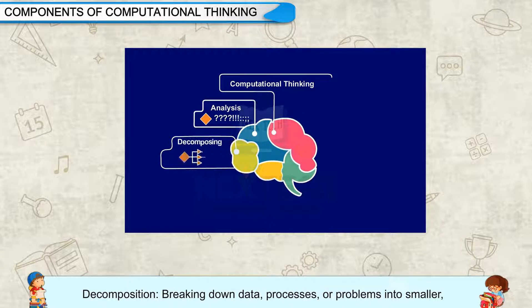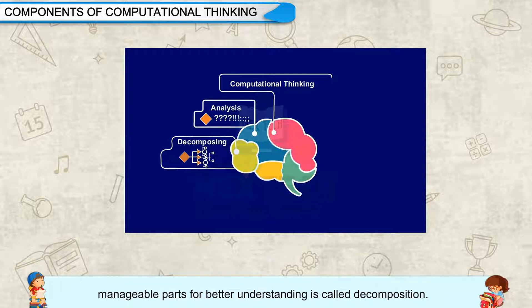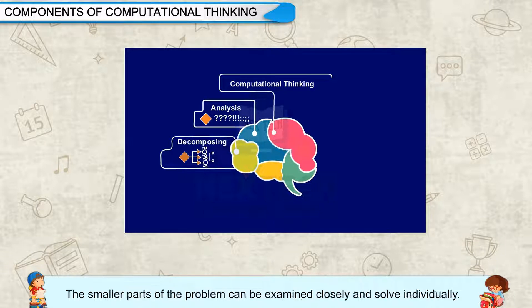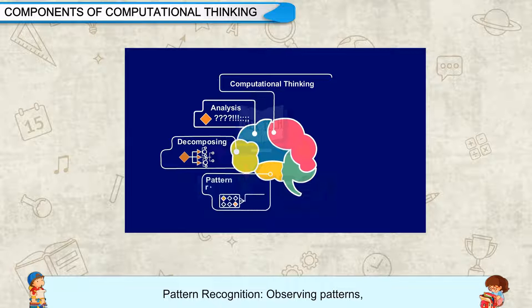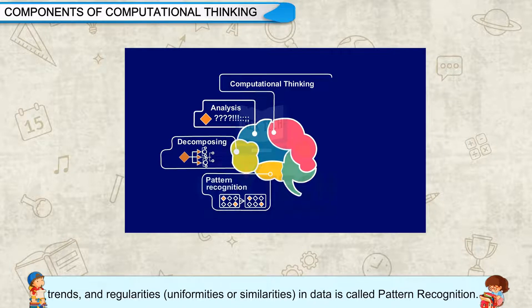Decomposition is breaking down data, processes, or problems into smaller, manageable parts for better understanding. The smaller parts of the problem can be examined closely and solved individually. Pattern Recognition is observing patterns, trends, regularities, uniformities, or similarities in data.